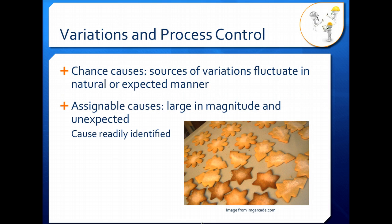When we're looking at variations and process control, we have two causes of variation. The first is chance causes, and so these are just natural variations that can happen. They are not necessarily serious in nature; they just cause a little bit of random variability in your process.